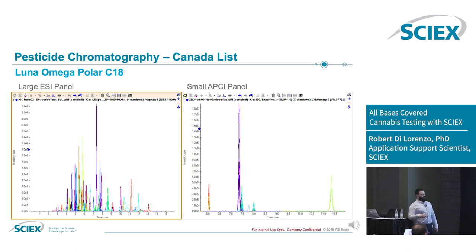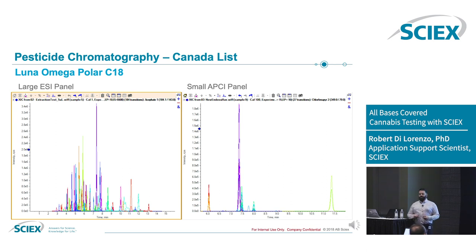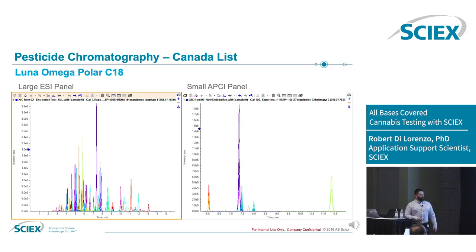And then a really small APCI panel to analyze all those compounds that weren't ionized by electrospray, but also for compounds that actually work better by APCI — things like chlorpyrifos methyl and parathion methyl can be analyzed by electrospray, but they work better by APCI. So we had about a 15 or 20 minute method in electrospray and a second injection that was 5 or 10 minutes in APCI.